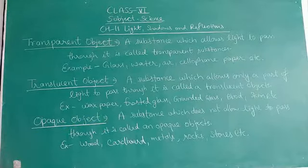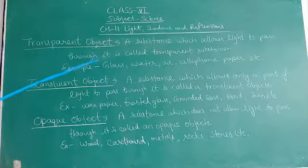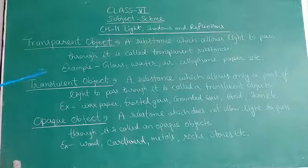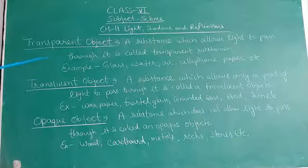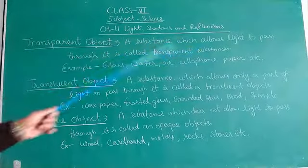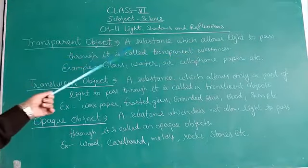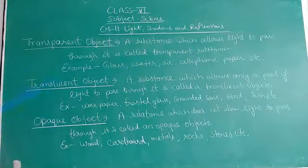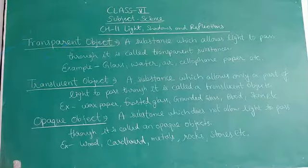So the first one is transparent object. The object which can allow light to pass through it, or from which we can see clearly, these are known as transparent objects. A substance which allows light to pass through it is called a transparent object, or objects through which we can see clearly are known as transparent objects.